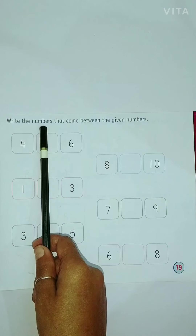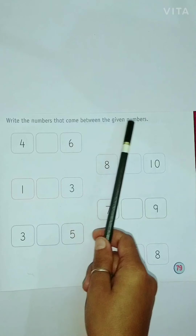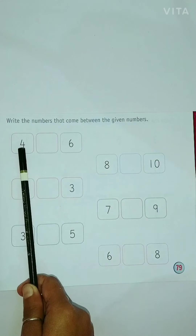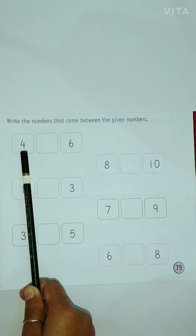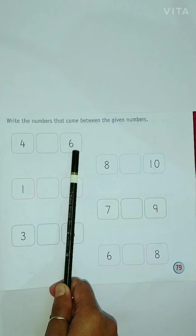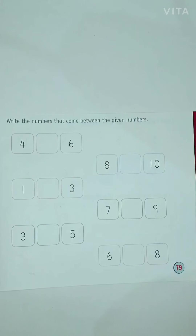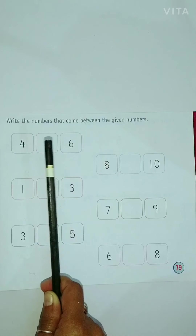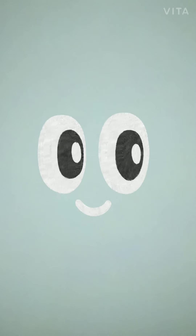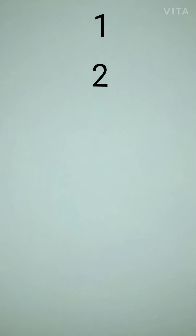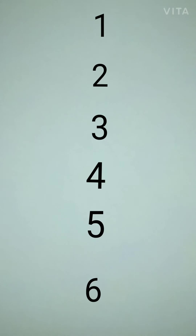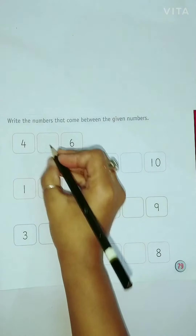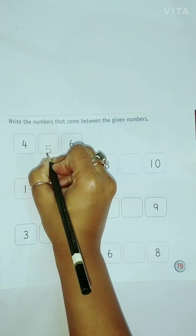Write the numbers that come between the given numbers. Which number is this? 4. And which number is this? 6. Tell me which number comes after 4 and before 6? Let us count: 1, 2, 3, 4, 5, 6. Which number comes after 4 and before 6? 5. So now we will write 5 over here.